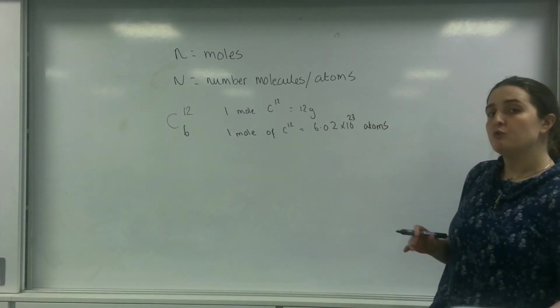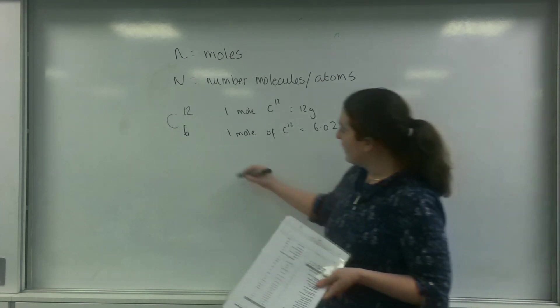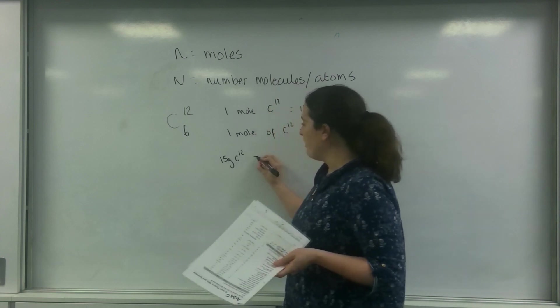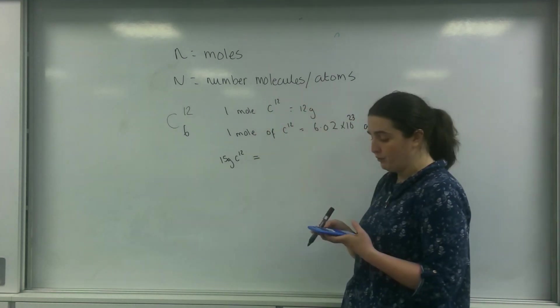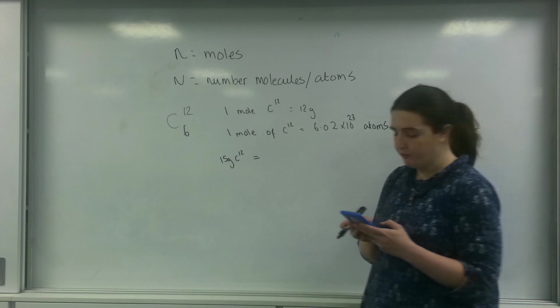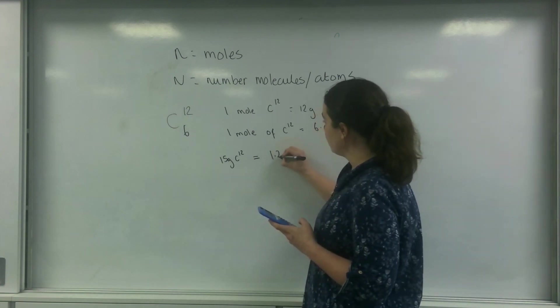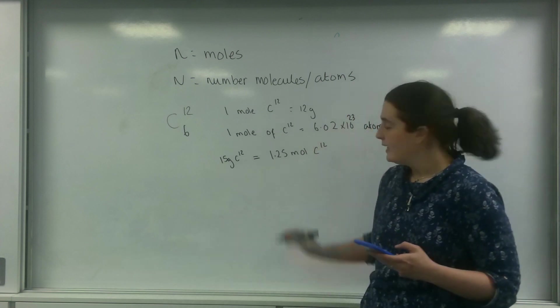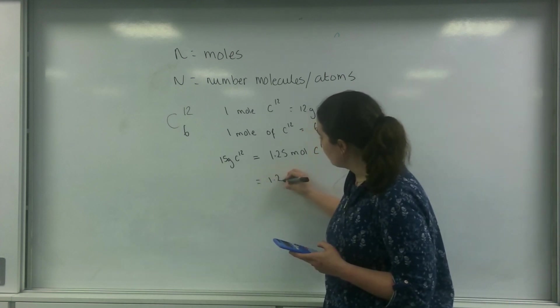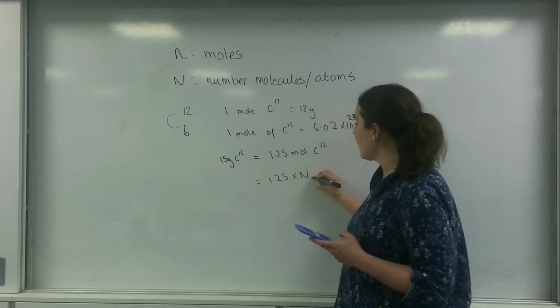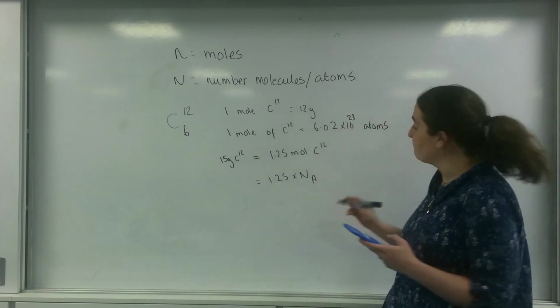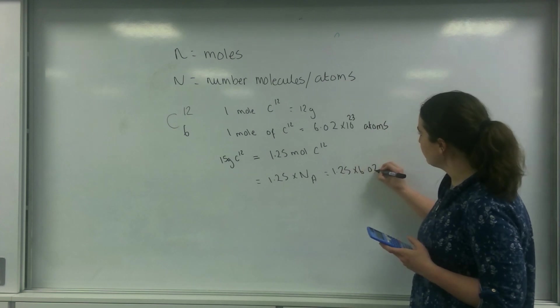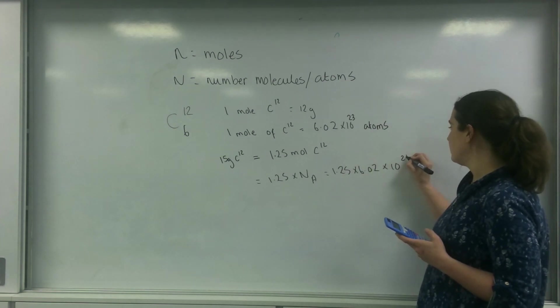So if I had a different amount, so let's say I had 15 grams of carbon 12, that equals, so if one mole is 12, 15 divided by 12, I have 1.25 mole of carbon 12. This means I have 1.25 times by this thing called Avogadro's constant, which is 1.25 times 6.02 times 10 to the 23.